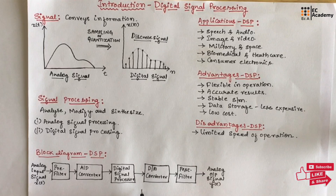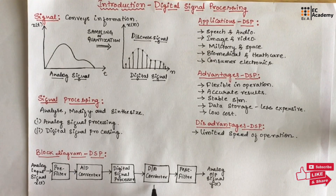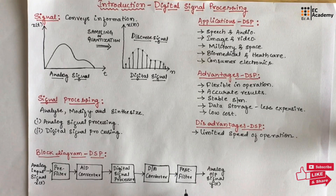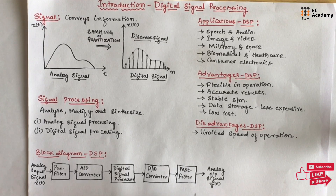The next block is the digital to analog converter. It performs the operation opposite to the analog to digital converter — it produces an equivalent analog signal from binary numbers. Next is the post-filter, which is also a low-pass filter that smoothens the waveform by removing high frequencies to obtain the desired signal in analog form.